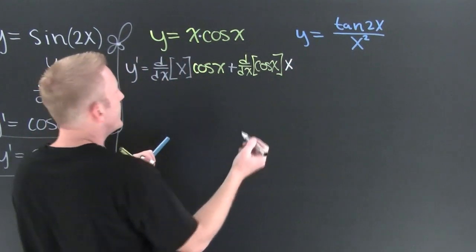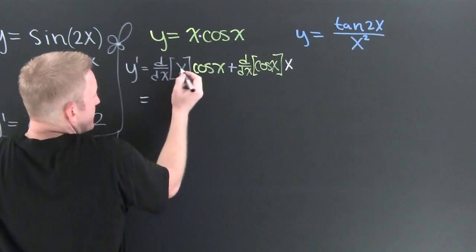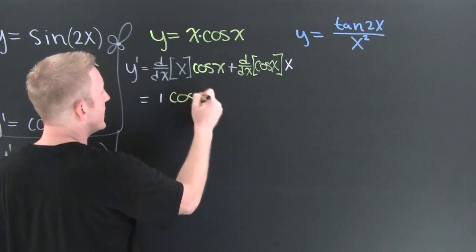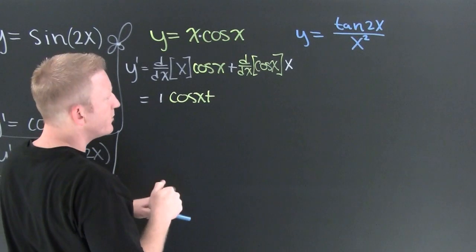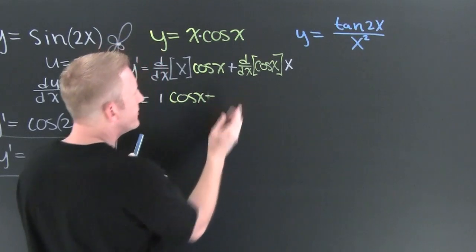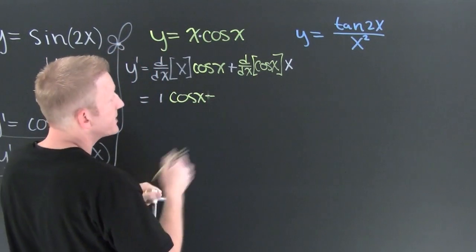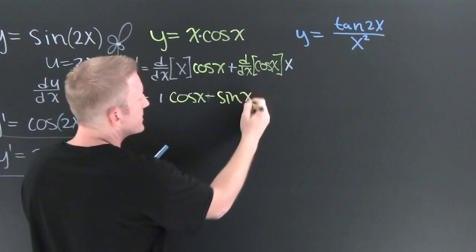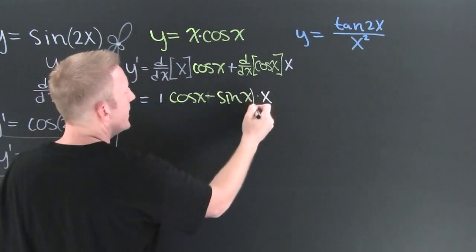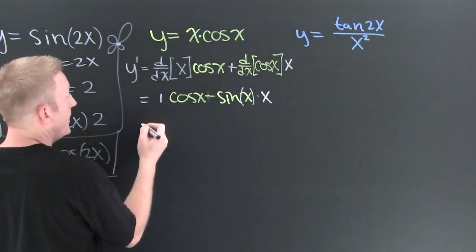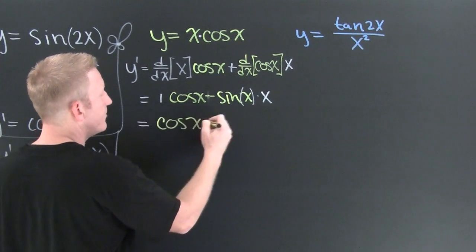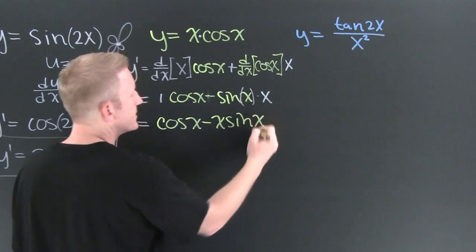Clean it up. The derivative with respect to x of x, that's going to be 1 times the cosine of x. Now what was the derivative of the cosine of x? Yes, that's going to be minus the sine of x times x. Let me just clean this up and write it in a nicer order. So then this is going to be the cosine of x minus x sine x. And then what?